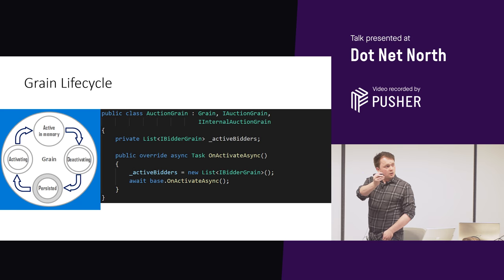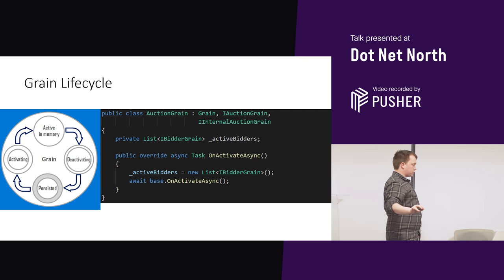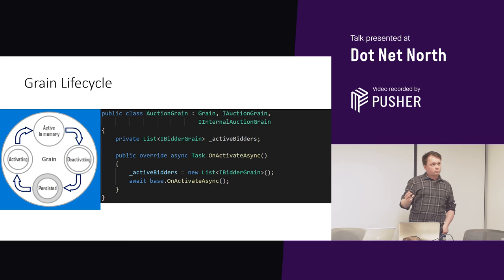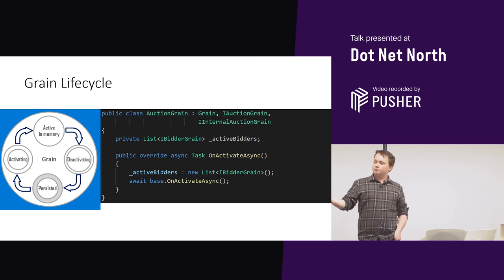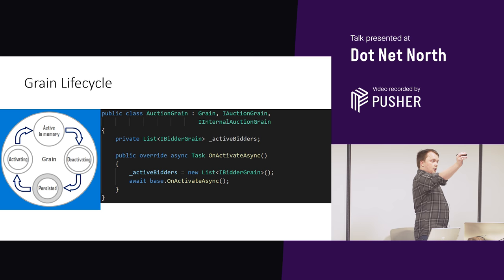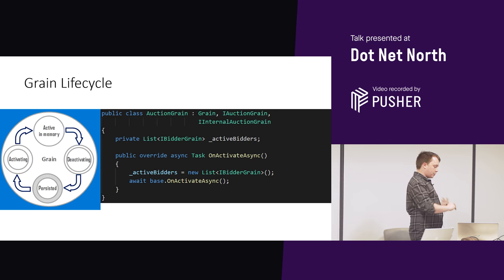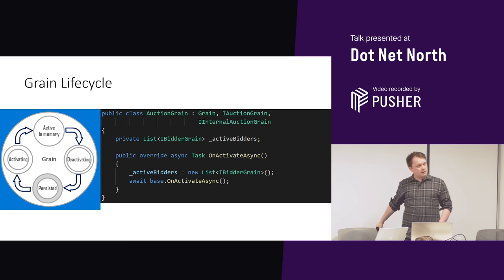So I've activated my grain — it's going to go into active memory, it exists somewhere across my cluster, and as a developer I don't care where. After a configurable timeout — I think the default is 20 minutes — Orleans will go: nobody's asked this grain for anything, so I'll just deactivate it. When it's deactivated, it can optionally do some persistence to save any state it has. Then if anybody asks for it again, it activates, reads out that data, and off we go — we can use it again.